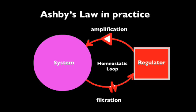Here is a diagram of a practical application of Ashby's law. The regulator achieves regulation by two means: it may amplify its control variety, or filter the variety coming from the system.